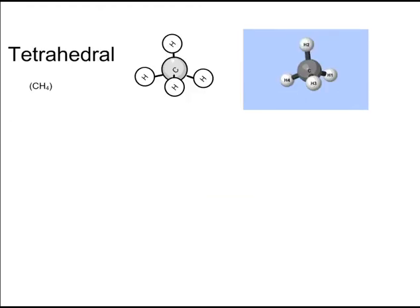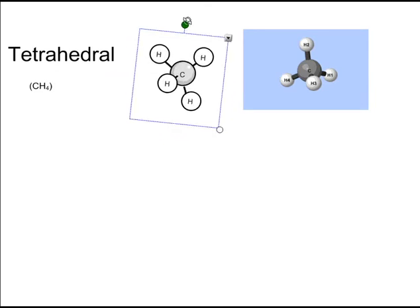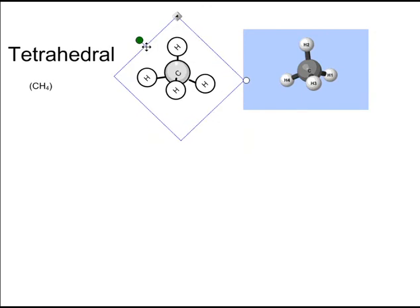Another structure that we have is the tetrahedral structure. The best example we can use is CH4, which we know as methane. We could also use CCl4, which we commonly call carbon tetrachloride. This structure has four molecules around a central atom, in this case the carbon atom.